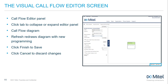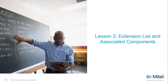When you've completed your programming on any Callflow component, don't forget to click the Finish button on the bottom right to save your changes. Should you wish to discard your changes and return to the component list, click Cancel. We will now take an in-depth look at each component and configure each one to build a Callflow.